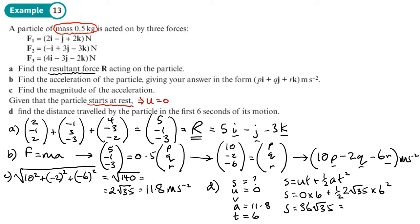And I get 36 root 35. And as a decimal that's, three significant figures, actually becomes 213. So let's write down 213, that's three significant figures, and since we're working out displacement that's going to be in meters.